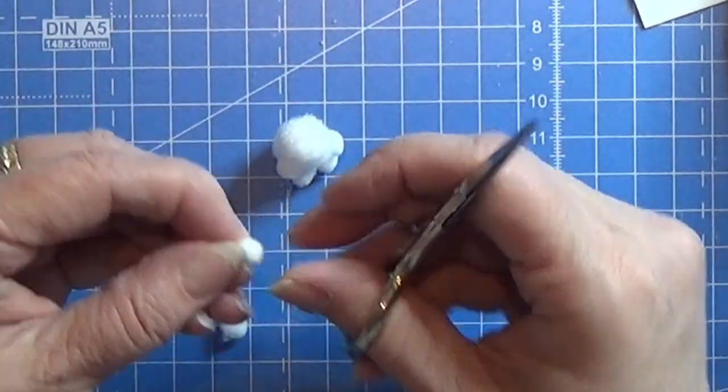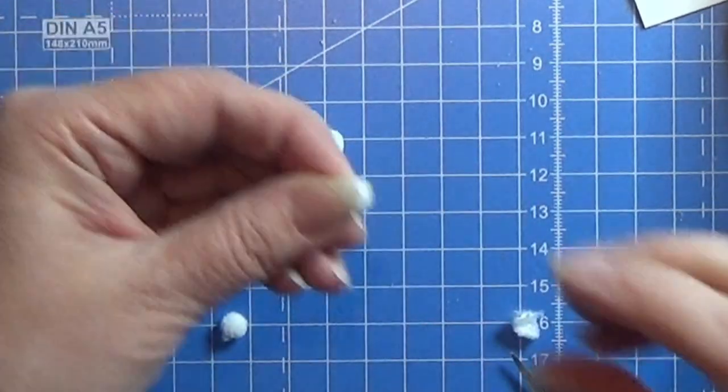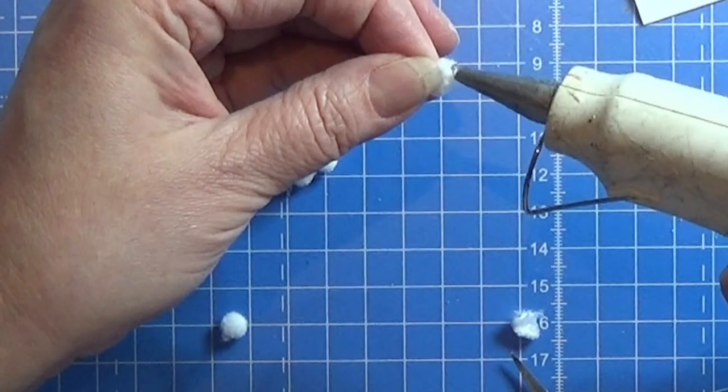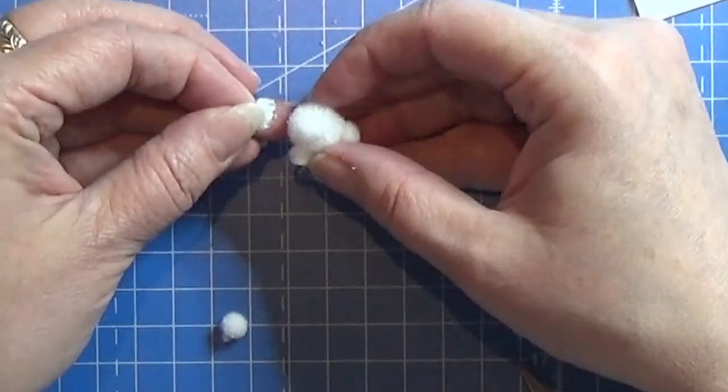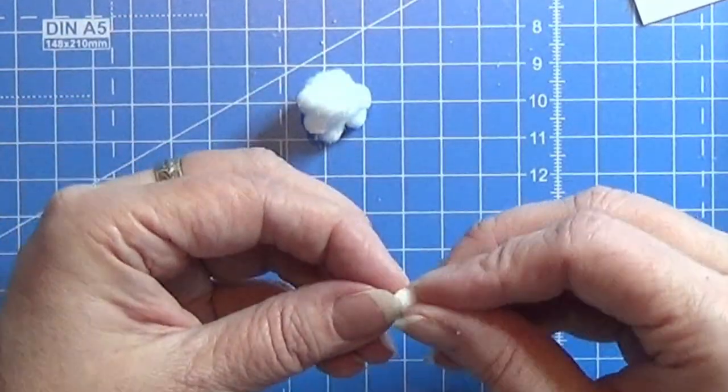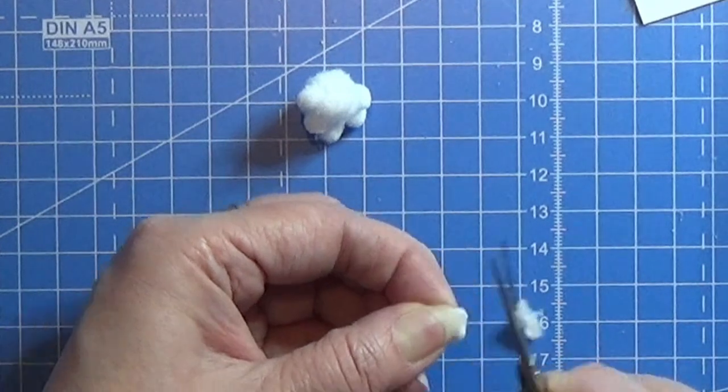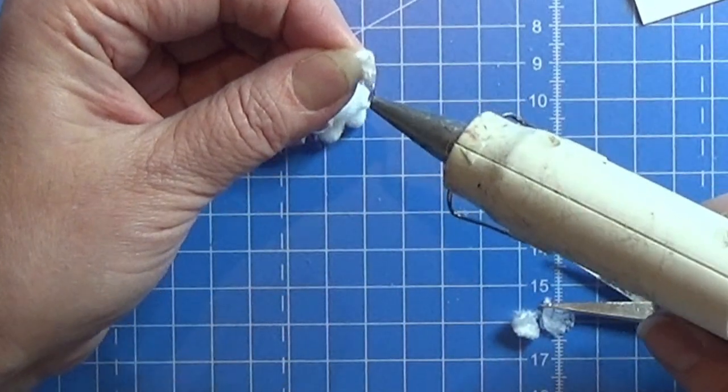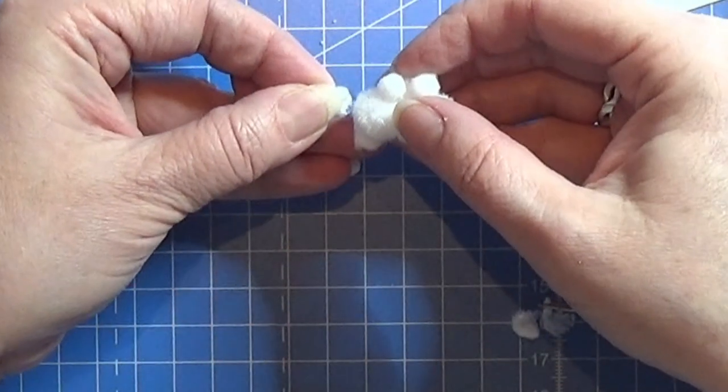I am taking one of these small pom-poms and I'm cutting off the bottom of them. I'm holding it firm between my hands otherwise it will unravel. And I'm gluing it on the teddy bear as the ear and I'm doing the same with the other one here. Just remember, hold it firm otherwise it will unravel.